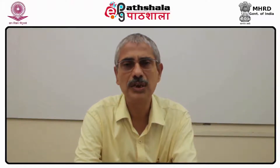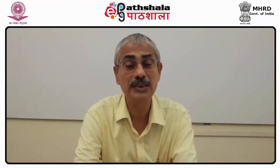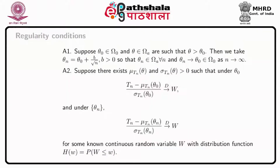When we use a fixed alternative, we cannot use such results. The regularity conditions are numbered A1, A2, A3, etc. First regularity condition: suppose theta naught belongs to omega naught and theta belongs to omega_a are such that theta is greater than theta naught.